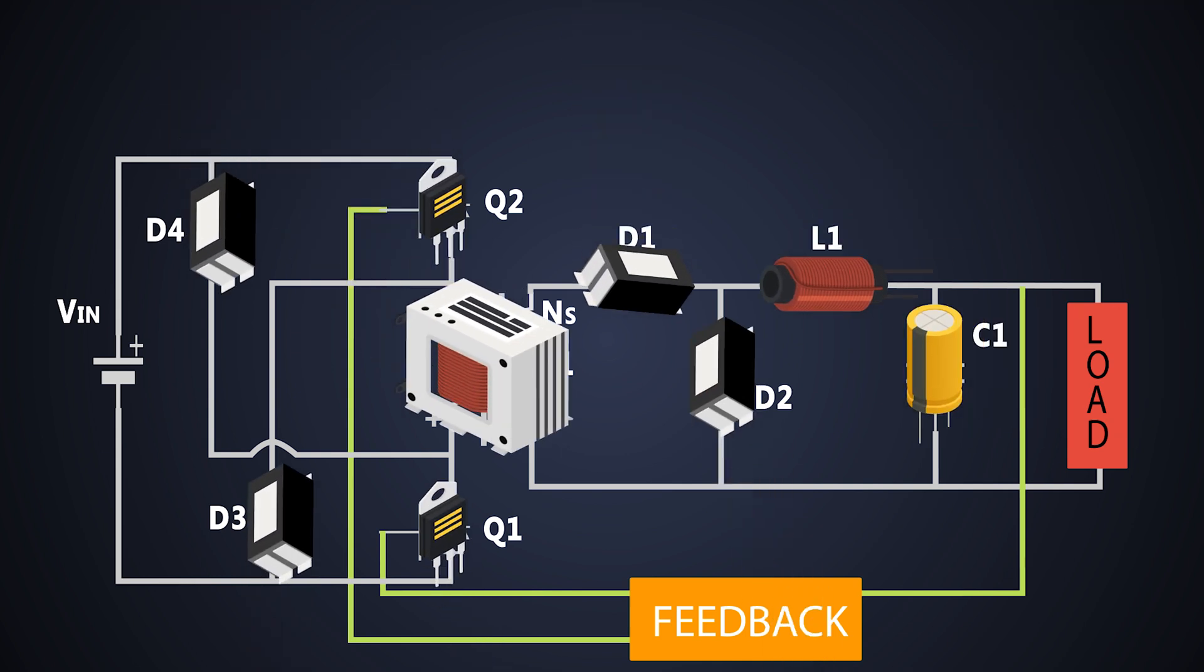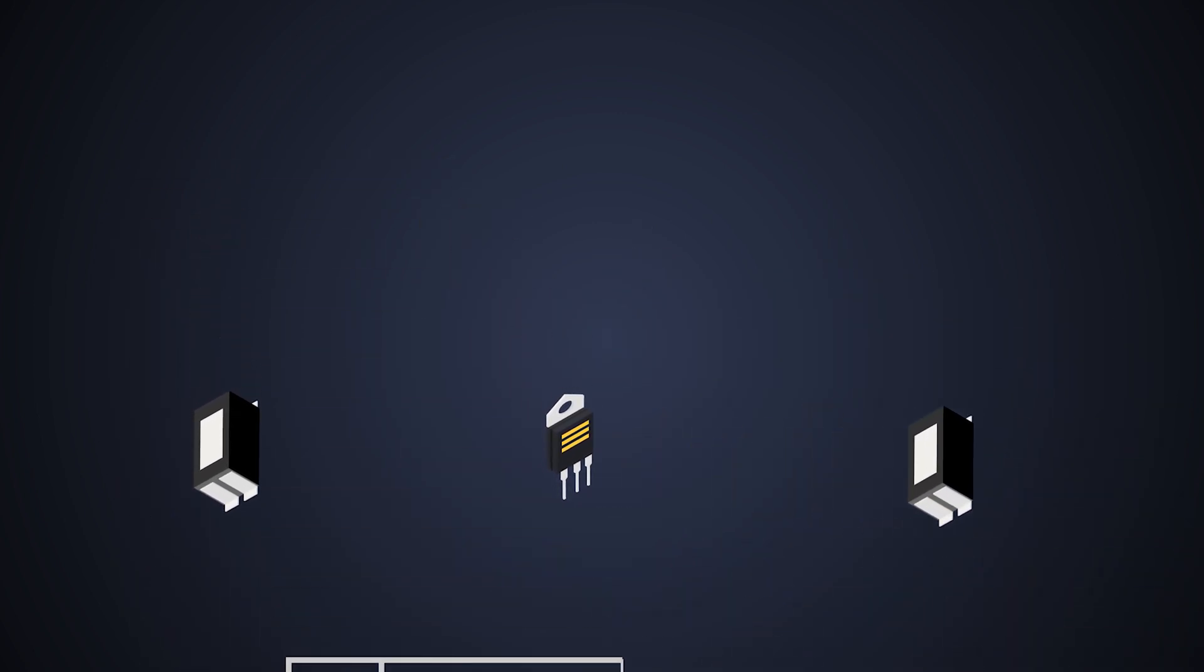This topology handles more power than any other forward converter because the voltage across each MOSFET doesn't rise beyond the input voltage. This topology is very easy to implement but due to the insertion of one MOSFET and two diodes, it becomes quite bulky and expensive.